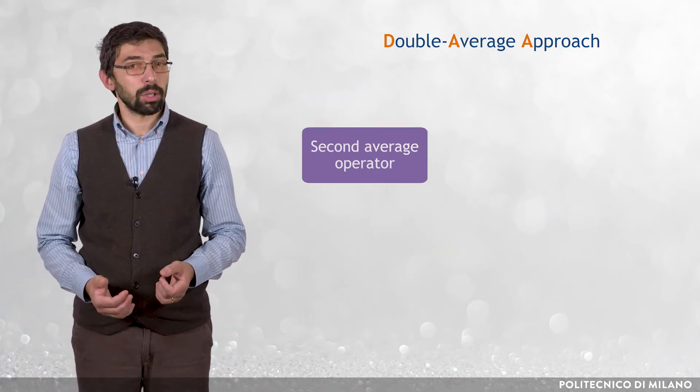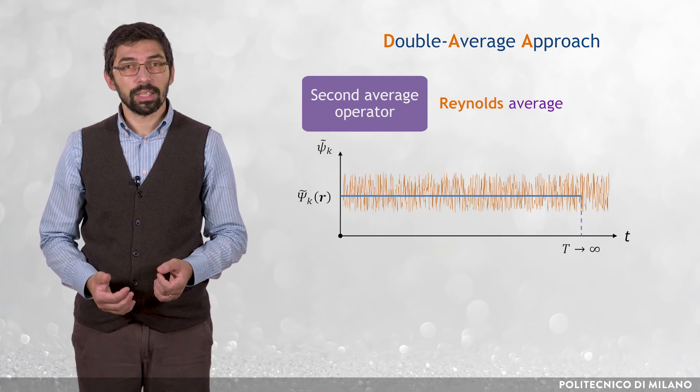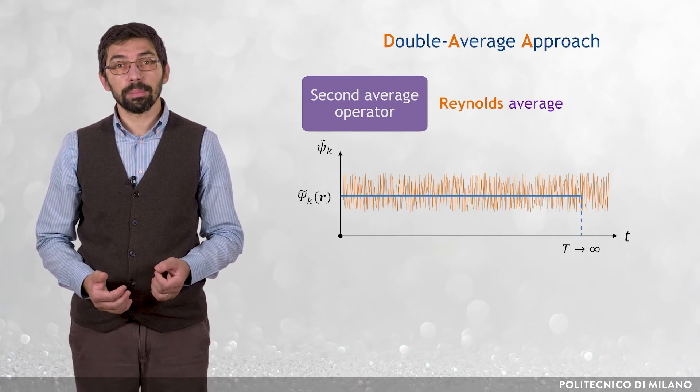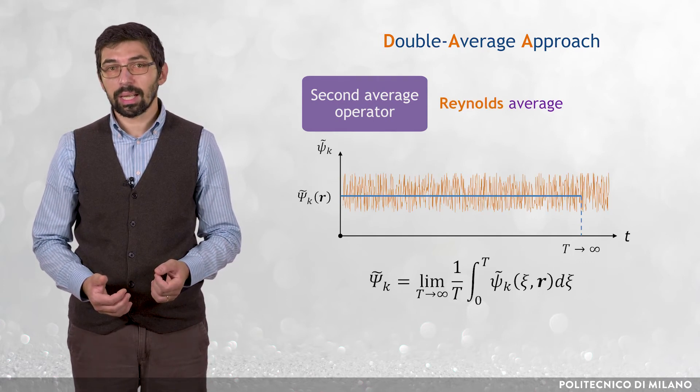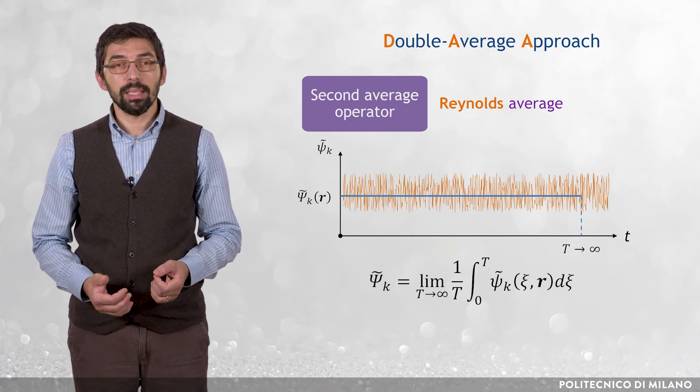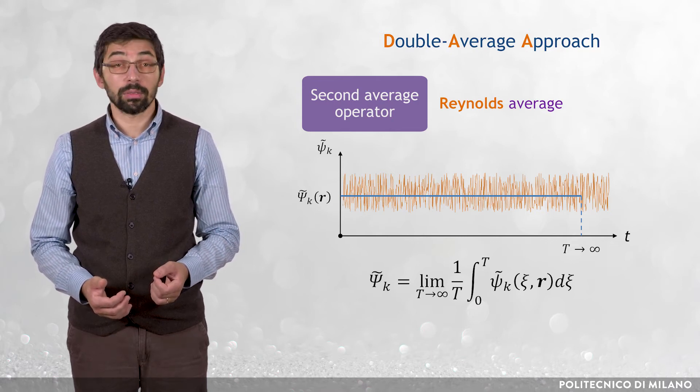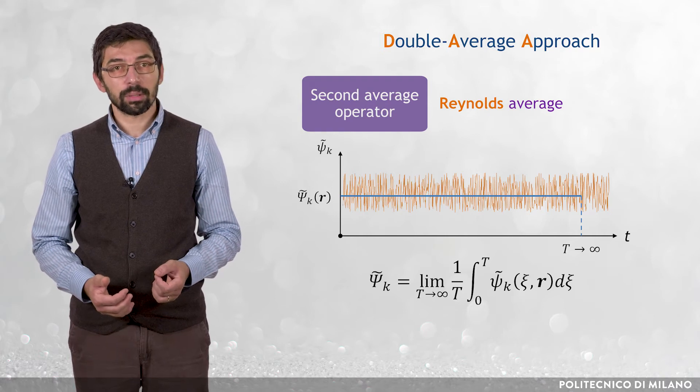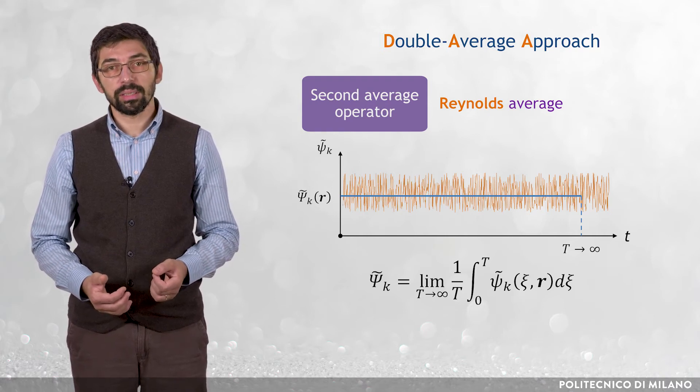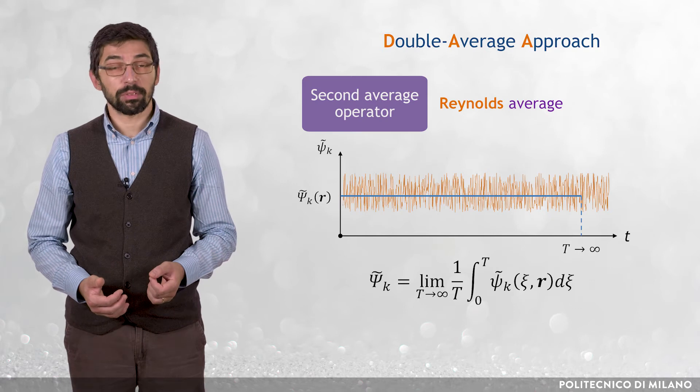Probably the simplest option is to apply a Reynolds average to each variable tilde psi k, that is, capital tilde psi k equal to the limit for T infinite of one over T of the integral from zero to T of small tilde psi k, function of xi and r, d xi.